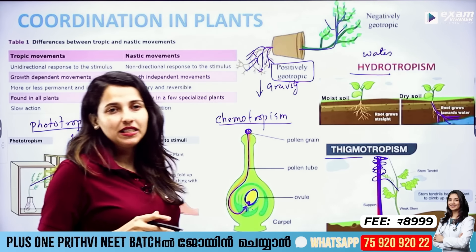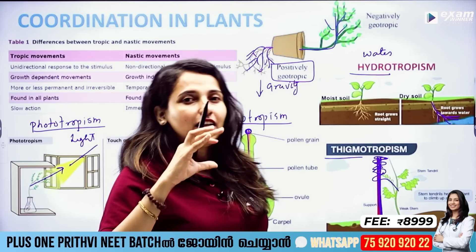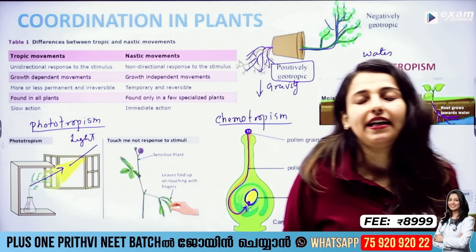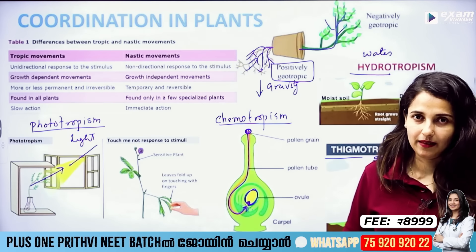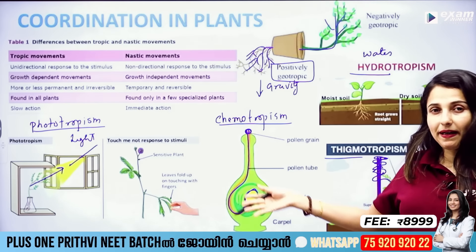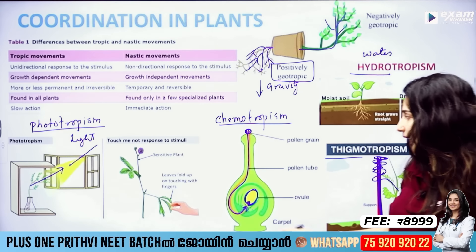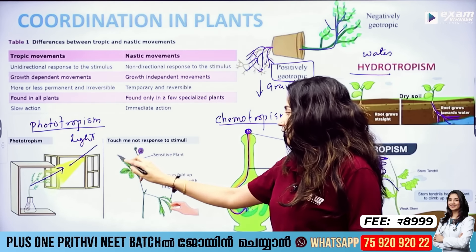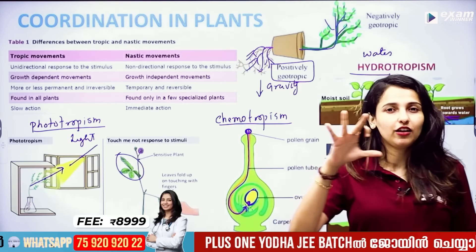What are tropic movements? They are growth-dependent movements. Growth-independent movements are called nastic movements. We are talking about the touch-me-not plant, where the leaves fold when touched — these are growth-independent nastic movements.